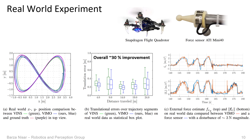During the experiment, we applied external forces of up to 3N with a force-sensing stick. The plot on the right shows WEMO's external force estimate in red against force sensor readings in blue. We see that our estimate is accurate but noisy due to high vibrations of the vehicle.